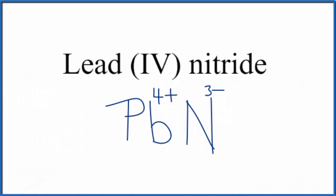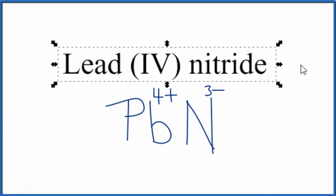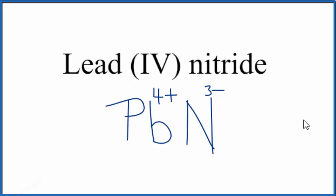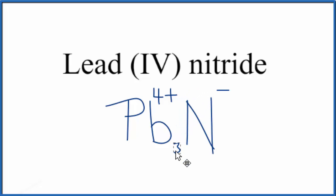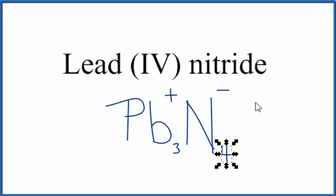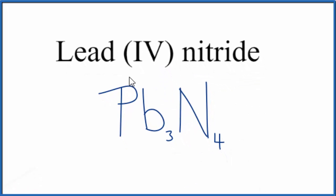Lead(IV) nitride is a neutral compound, so these charges have to add up to zero. We have 4+ and 3−, which is a little tricky. We can use the crisscross method — move the 3 down to lead and the 4 over to nitrogen. That gives us the formula Pb₃N₄.